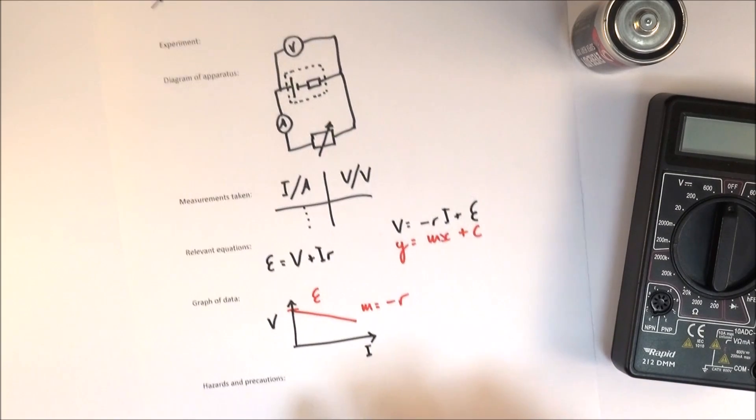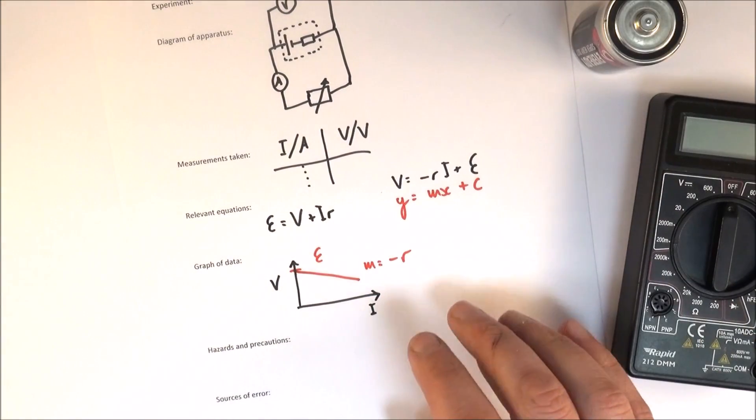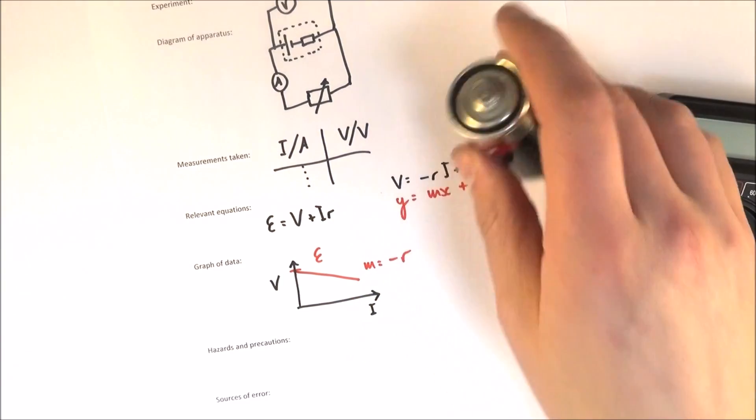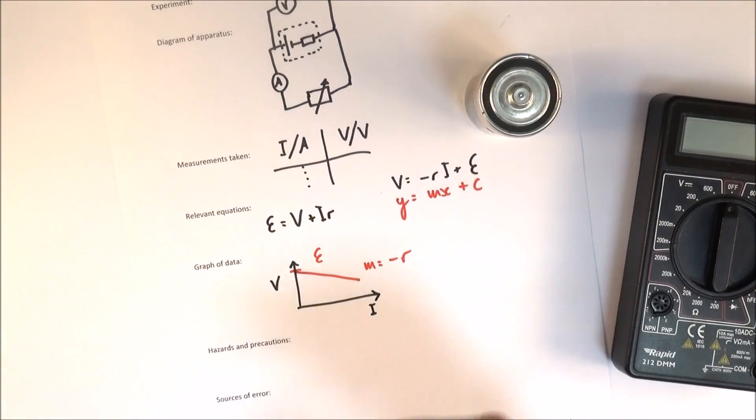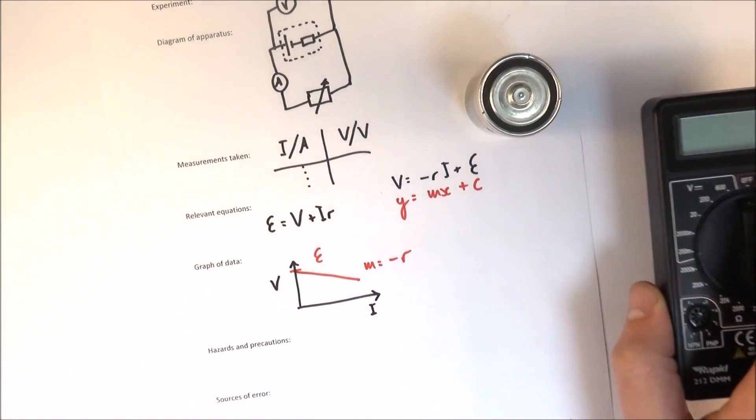Finally on the sheet here I've got sources of error and again some of them there might not be too many errors. It might be that you may have something heating up if it's left on for too long. So what are the errors and how can you reduce this? Is there a way that you can make your measurements better? You know rather than just using an analogue meter you're maybe using a digital meter for example.